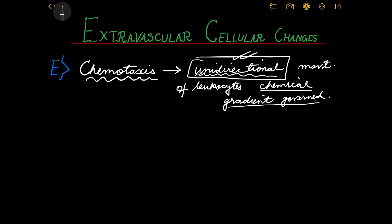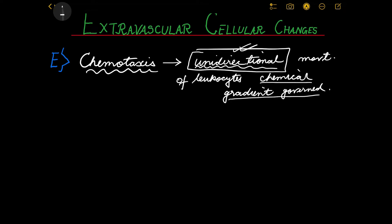The leukocytes move from lower concentrations of chemoattractants toward greater concentrations. This is logical because now that WBCs are finally free from blood vessels, they need to reach the actual site where offending agents are present - to find those microbes, bacteria, or foreign bodies. To find their way, these chemoattractant molecules are required. The next question is: what constitutes the chemoattractants?